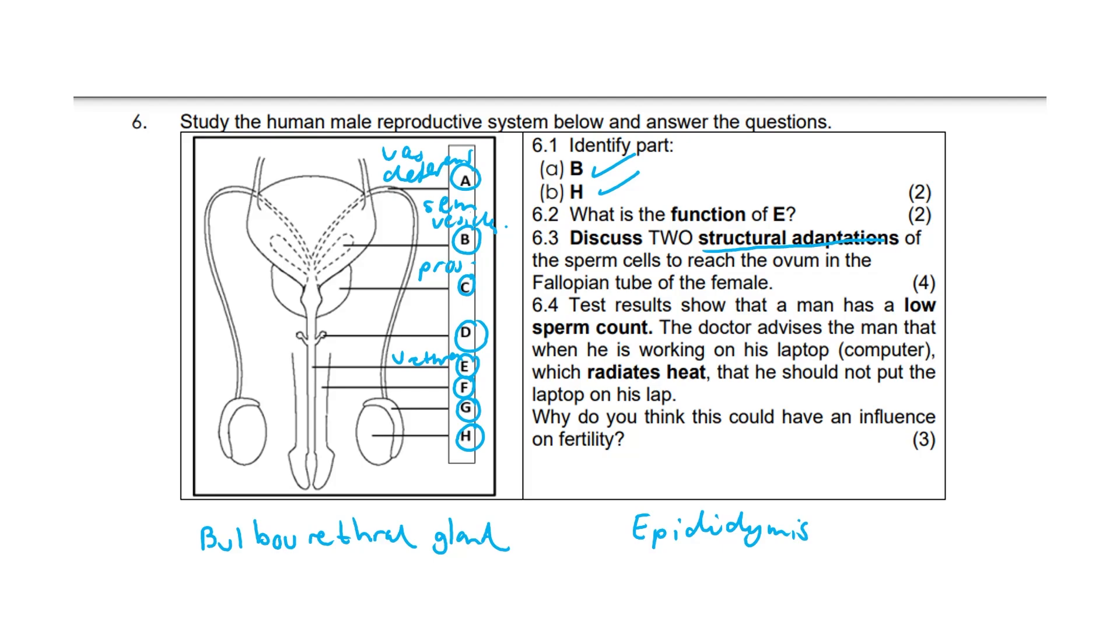Finally, 6.4: Why do you think this could have an impact on fertility? How could it influence it? Optimal sperm production occurs at two to three degrees lower than body temperature. The warmth will increase the temperature of the testes, and sperm production will decrease and therefore won't be optimal, and will therefore decrease fertility. So if there's warmth, it'll increase the temperature of the testes and sperm production will decrease, and this decreases fertility. Therefore, these conditions are not optimal. And that's it.